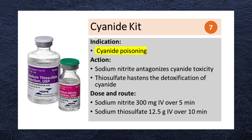The cyanide kit contains sodium nitrite and sodium thiosulfate for intravenous infusion. Sodium nitrite antagonizes cyanide toxicity, while thiosulfate hastens the detoxification of cyanide. Sodium nitrite is given as 300 mg IV over 5 minutes, and sodium thiosulfate is given as 12.5 g IV over 10 minutes.